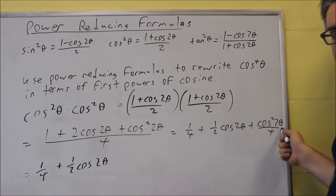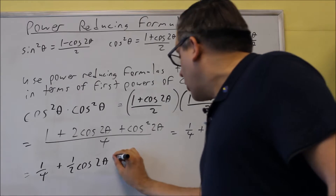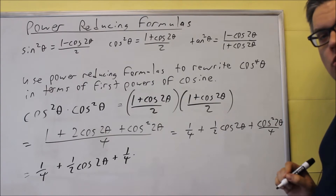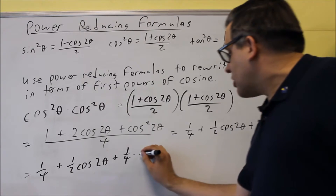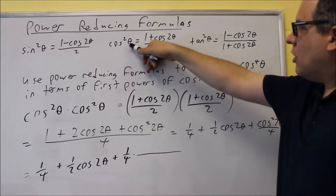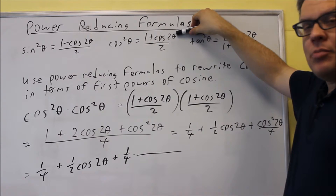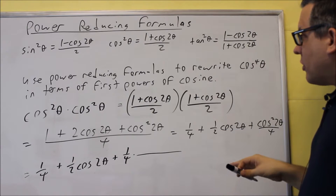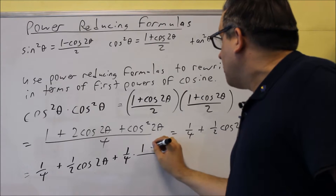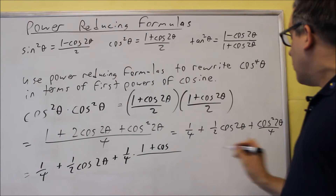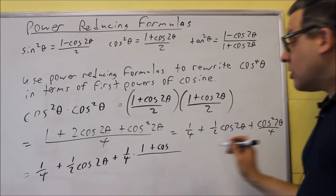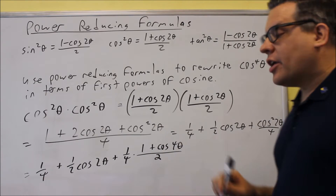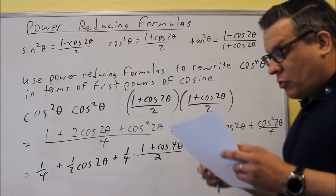Now we'll work with the cosine squared(2θ) term — it's another one with a cosine squared, so we apply another power reducing formula. We put the one-fourth out front and work with cosine squared(2θ). Notice that whatever angle you have, the formula doubles it — so since we have 2θ, we write 1 + cos(4θ), over two.